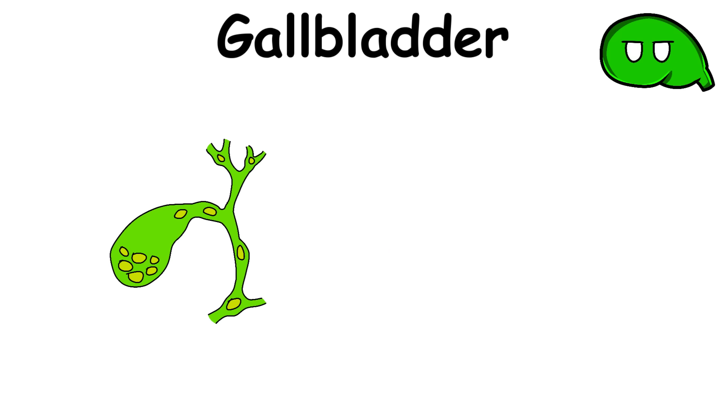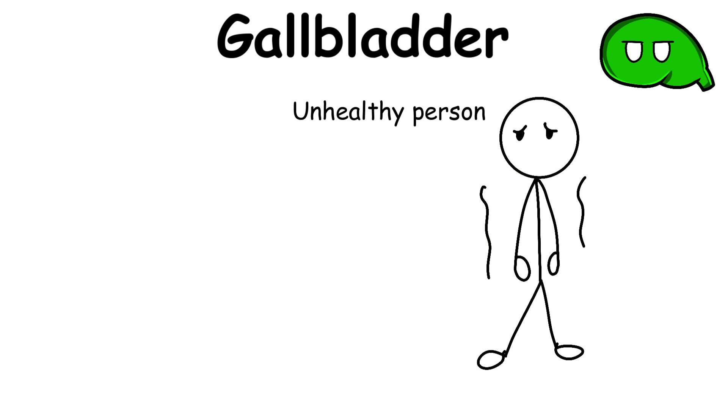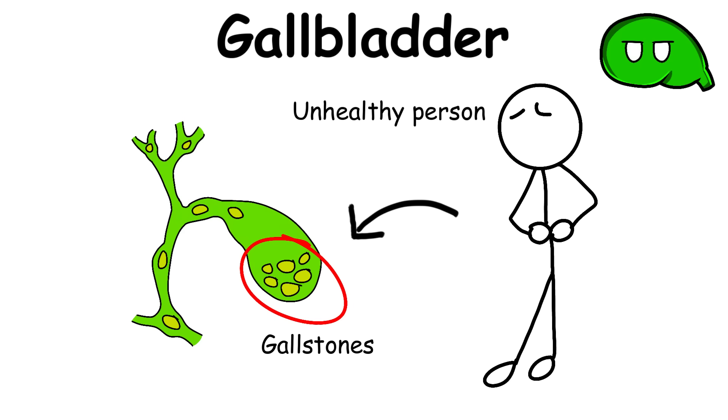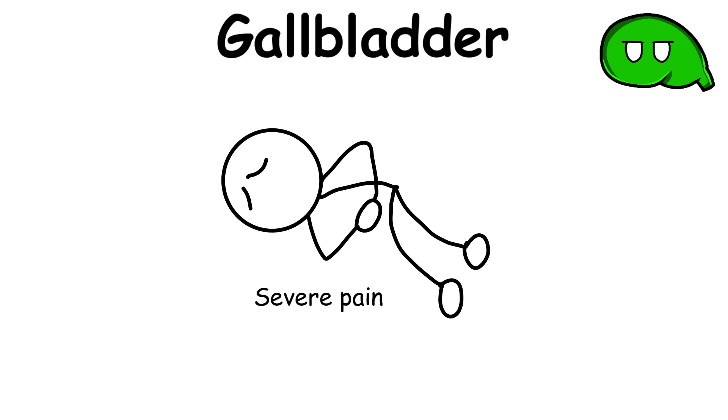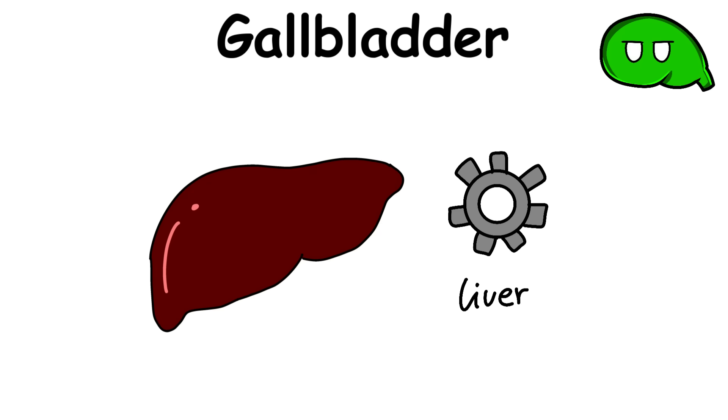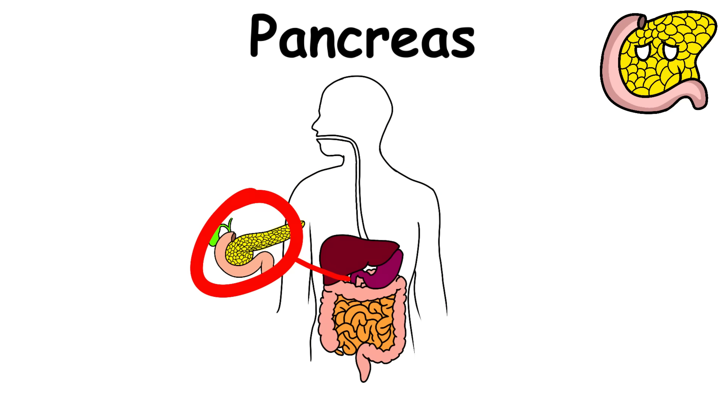Bile is a substance the body produces to help digestion because it can break down fats. However, an unhealthy person may develop gallstones that can block the gallbladder. On top of causing severe pain, this can interfere with the person's digestion and even with the functions of the liver.